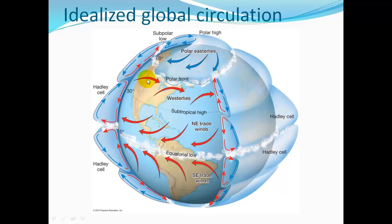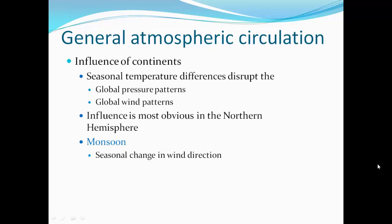In wintertime, the polar front comes down over the United States bringing winter weather. This past winter, the polar front went really far south — we're calling it the polar vortex. On the continents, seasonal temperature differences disrupt the global pressure patterns and wind. The influence is most obvious in the northern hemisphere because most of the land is there, and we have differential heating and cooling.